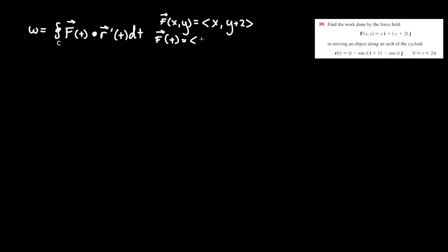So x is t minus sine t and here we have y plus 2. So first we need y, 1 minus cosine of t. However there's also a plus 2 so don't forget to add that portion.